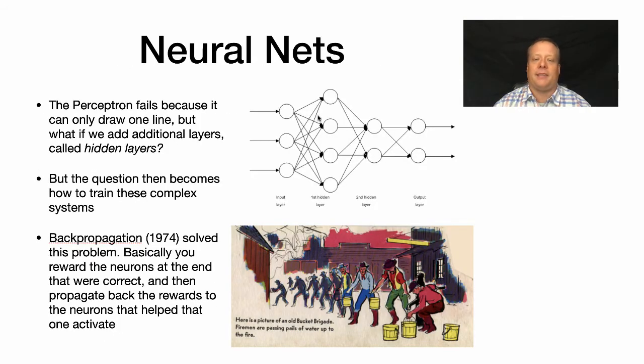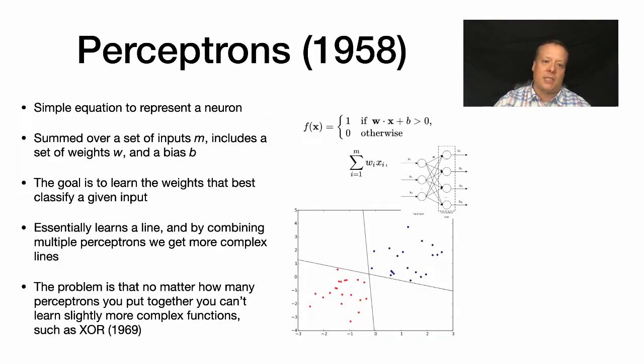It kind of caused the death knell for perceptron and neural net research for a while. But then in the 1970s, a solution using a hidden layer was discovered to solve the XOR problem. The perceptron essentially failed because it had no way to create non-linear functionality.